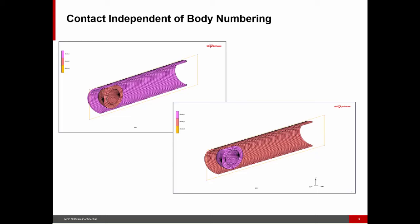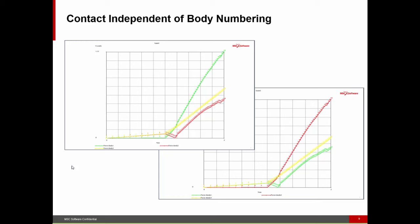Here's another example. We have a very flexible rubber ball in a cylinder — two deformable bodies in the symmetry plane. If we squeeze the cylinder and look at the time history of the contact forces, we see that while the colors have changed because the body order has changed, the results are identical and the trends are absolutely identical.